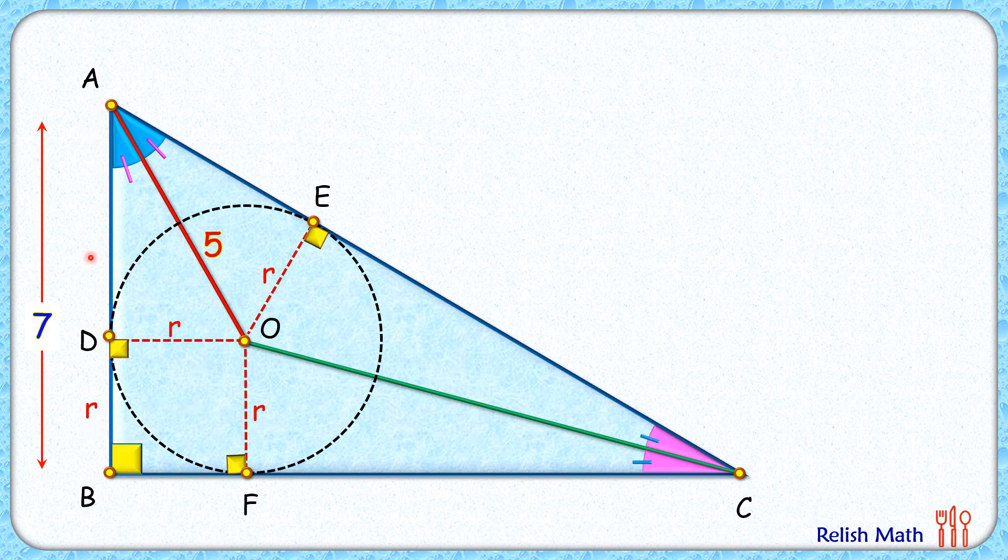How about AD? AD will be the full length 7 minus r, so AD length will be 7 minus r. If you look at the triangle ADO, it's a right angle triangle. Applying Pythagorean theorem, we'll get (7 - r)² + r² = 5². Now opening up this bracket with (a - b)² formula, we'll get our equation in this form.